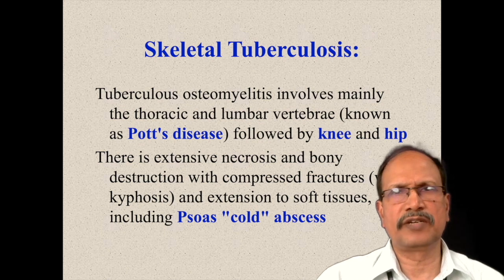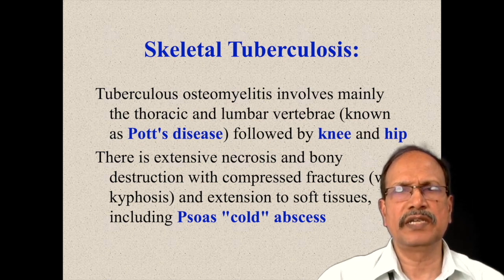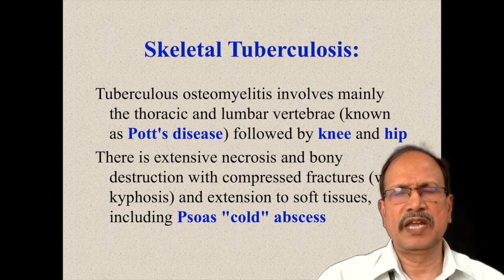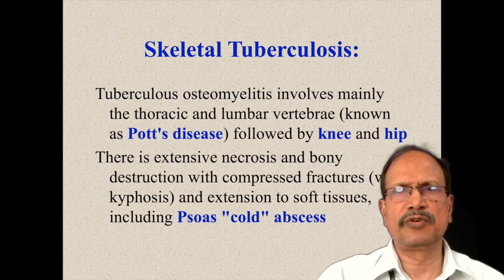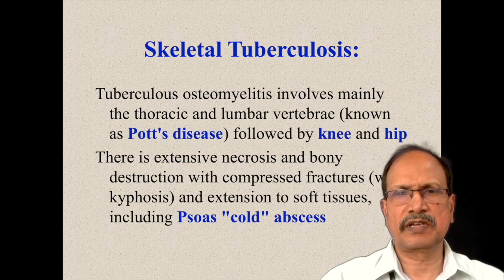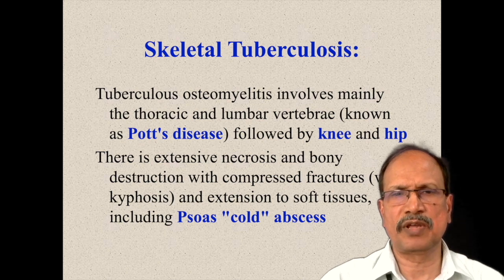Skeletal tuberculosis is always secondary tuberculosis. Different bones may be involved, but mainly thoracic and lumbar vertebrae are the targets in addition to knee and hip. If the knee and hip are affected, you may see muscle wasting around these joints. In the case of vertebral involvement, the patient may present with kyphosis, that is compression fracture, and the caseous material may track down the vertebral column to produce abnormal swellings in the inguinal or lumbar regions, mimicking hernias. There is extensive necrosis, bone destruction, compression fracture producing kyphosis, and extension into soft tissue producing masses in abnormal areas due to cold abscess.